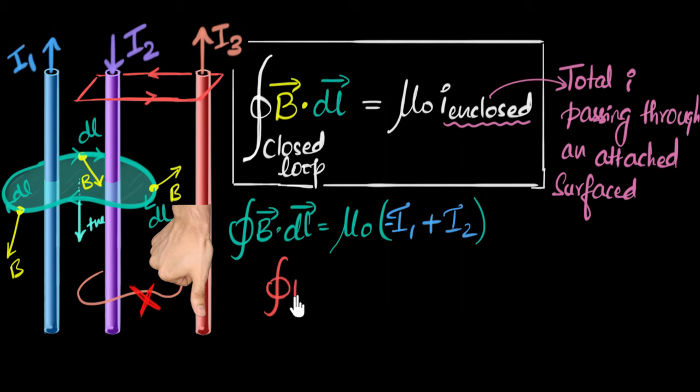And this time, let's say we walk this way and calculate B dot DL. Can you pause the video and think about what will be the closed loop integral of B dot DL over here? It's gonna be μ₀ times something. What will that be? Can you pause and think about this?